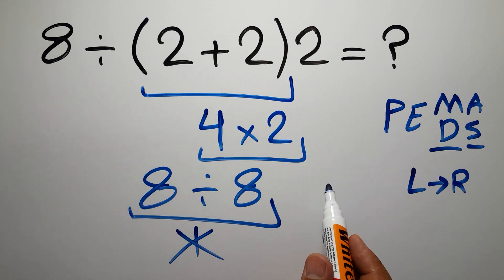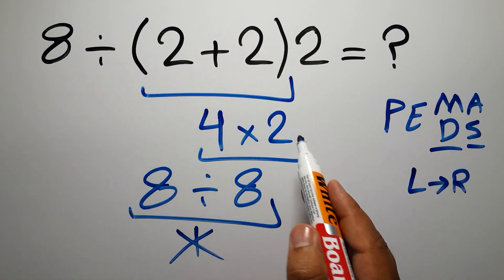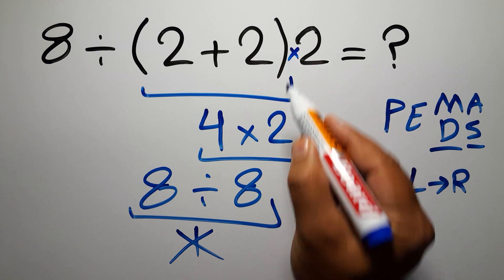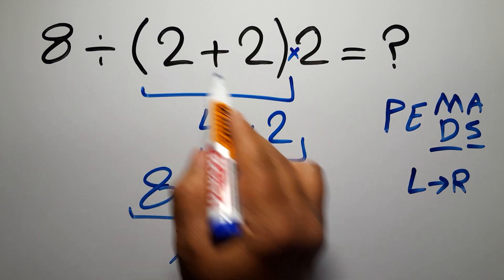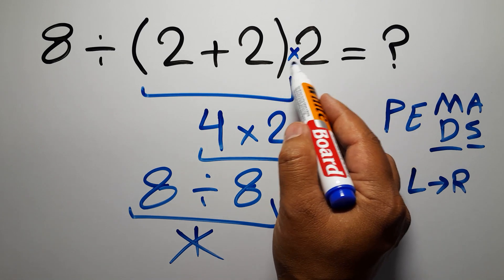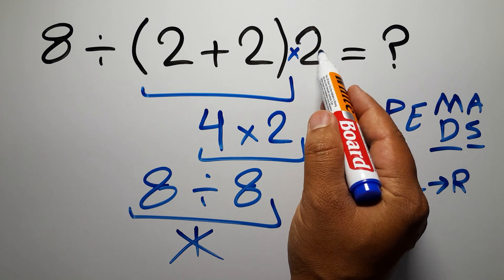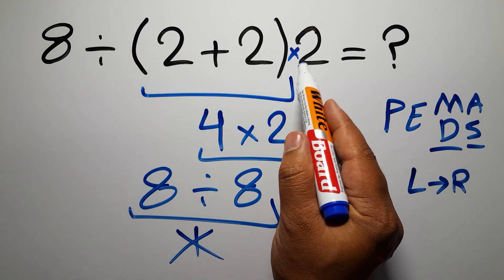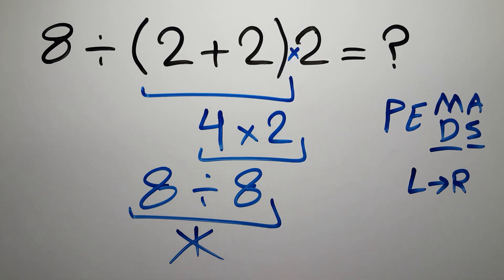In this expression, we have one division, one parentheses, and one multiplication, and inside these parentheses we have one addition. We need to pay attention that here we have a multiplication, because in mathematics, when a number is placed next to parentheses, it means multiplication, and we usually don't write the multiplication sign for brevity.